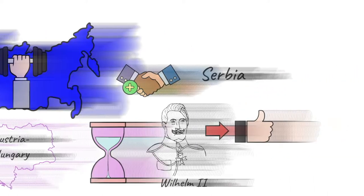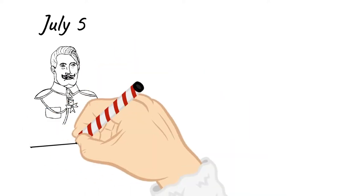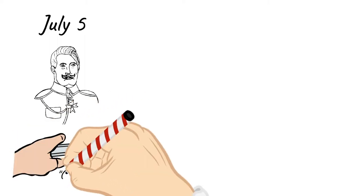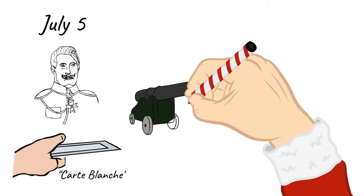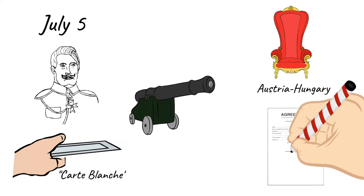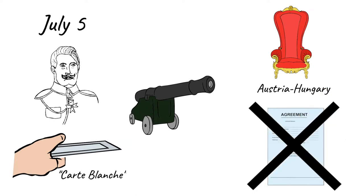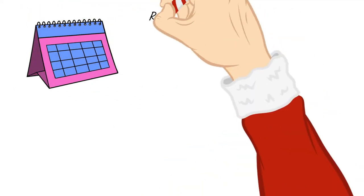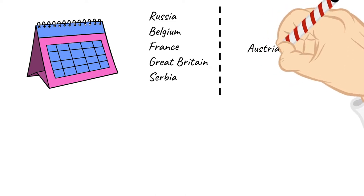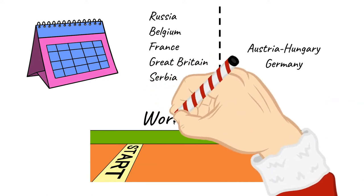On July 5th, Kaiser Wilhelm pledged his support, but did it in secret, giving Austria-Hungary a so-called blank check. This blank check was assurance of Germany's backing in the case of war. The monarchy of Austria-Hungary then sent an ultimatum to Serbia, but this ultimatum had such harsh terms it made it almost impossible to accept. Within just a week, Russia, Belgium, France, Great Britain, and Serbia had lined up against Austria-Hungary and Germany, and World War I had begun.